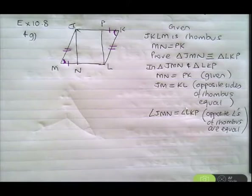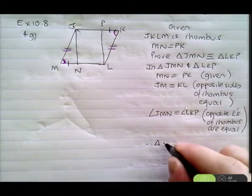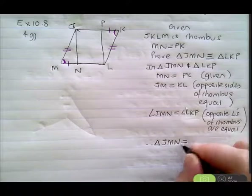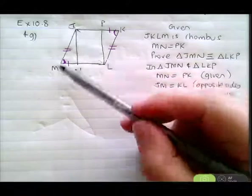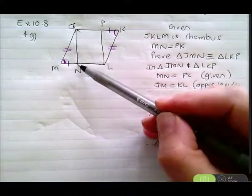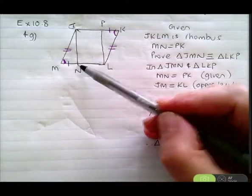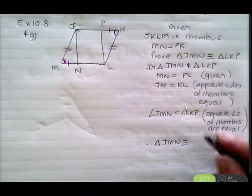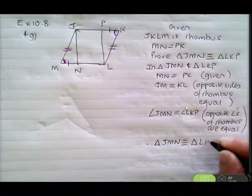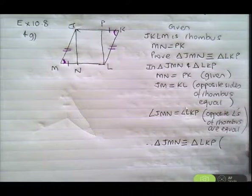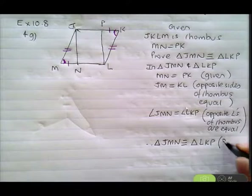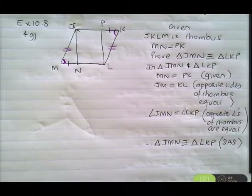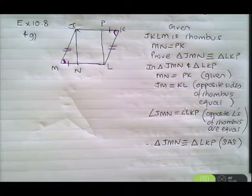What have we got? Therefore, triangle JMN — we've gone along the double dash side then along the single dash side, so do the same — is congruent to triangle LKP. The reason is SAS: two sides are the same and the included angle is equal.